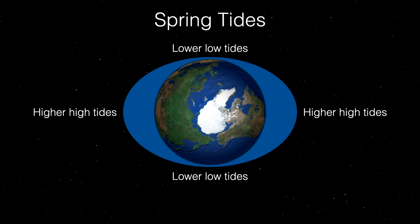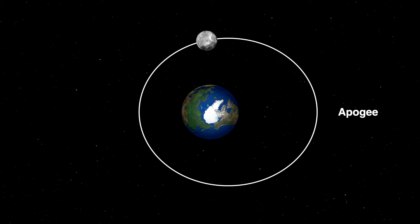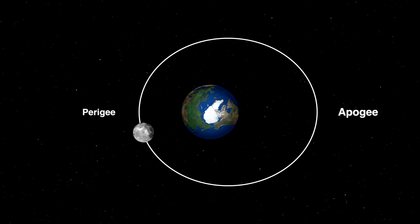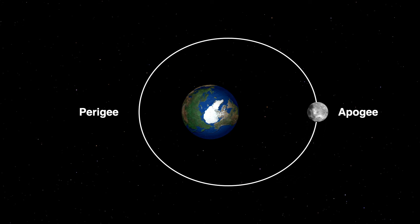Let's see what those factors are. The moon revolves around the earth in an ellipse — sometimes farther from the earth, called apogee, and sometimes coming closer to the earth, called perigee. At perigee, the tidal effects are greater; at apogee, the effects are less. So once a month, when the moon is closer to the earth, we get enhanced tides.